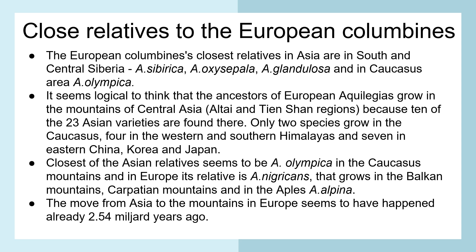Closest to the Asian relatives seems to be Olympica in the Caucasus mountains, and in Europe its relative is Aquilegia nigricans, that grows in the Balkan mountains and Carpathian mountains, and in the Alps is Aquilegia alpina. The move from Asia to the mountains in Europe seems to have happened already 2.54 million years ago.